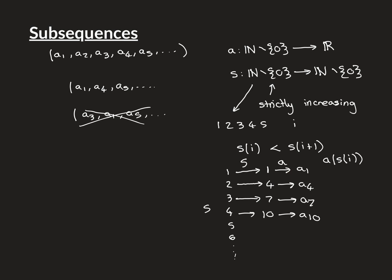The composition a∘S maps the natural numbers (without 0) to the real line, so it is itself a sequence — and it captures the idea of a subsequence. Written out: the first term (i=1) maps to A1; the second term (i=2) maps through 4 to A4; the third (i=3) maps through 7 to A7; the fourth (i=4) maps through 10 to A10, and so on.